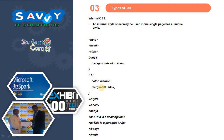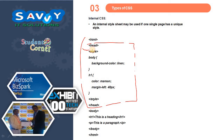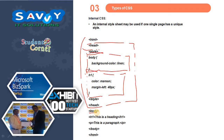Internal CSS: an internal style sheet may be used if one single page has a unique style. These styles are defined in the head section. Under the style tag in the head section, we define styles for body and h1. Whenever we use the body tag, the styles are automatically reflected; similarly, whenever we use the h1 tag, those changes are reflected.